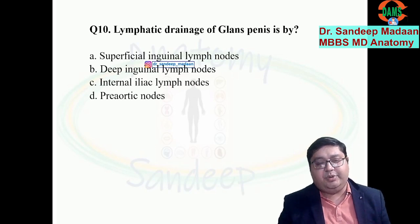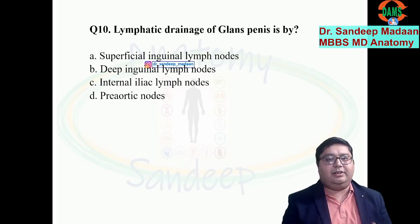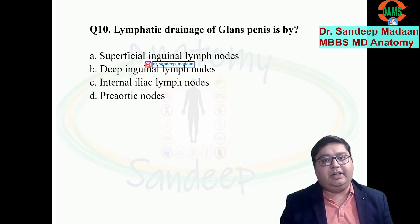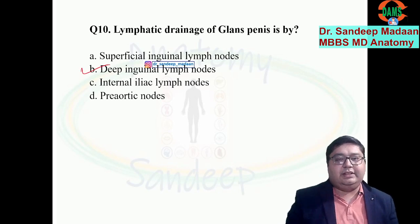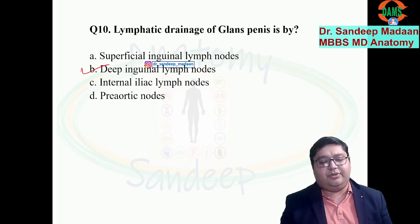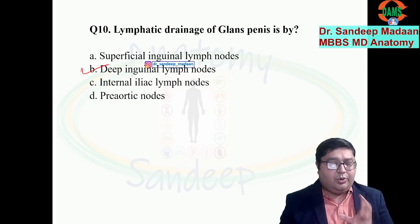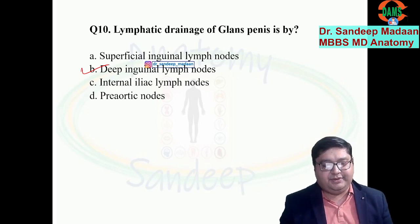Regarding lymphatic drainage: the penis as a whole drains into the superficial inguinal lymph nodes — specifically the horizontal medial group. But the glans penis drains into the deep group — the lymph node of Cloquet. Similarly, the scrotum drains into the superficial inguinal group, but the testes drain into the pre-aortic and para-aortic lymph nodes.